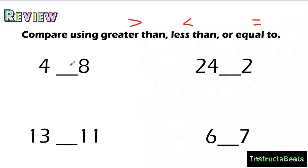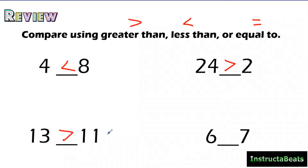So if we want to compare four and eight, obviously four is less than eight — we read it left to right, just like we would read a book. Twenty-four is greater than two. Thirteen is greater than eleven. And six would be less than seven. We're going to be using our inequality symbols of greater than, less than, and equal to today.